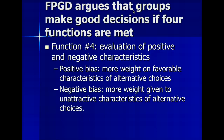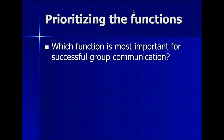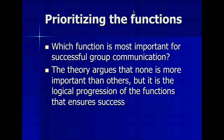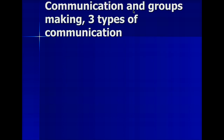FPGD doesn't say either a positive or negative bias is better — it says it's going to depend on what you're trying to accomplish. Now, which of these functions is the most important for successful group communication? This theory argues it's none of them individually. It's the progression through these functions that leads to good decisions being made — it's moving from step to step to step that actually helps good decisions happen.